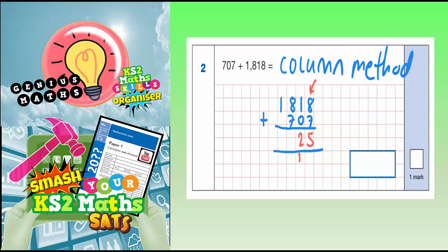8 plus 7 is 15. Put the 5 in, carry the 1. And 1 plus the 1 you just carried is 2.